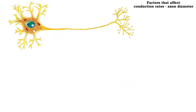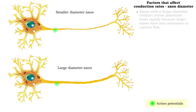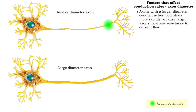Larger diameter axons conduct action potentials more rapidly than smaller diameter axons. This is because there is less resistance to carrying a charge in larger axons.